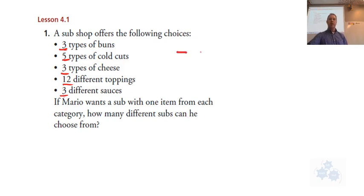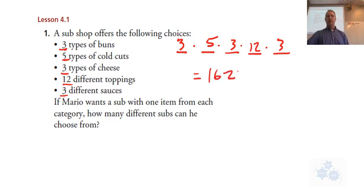If Mario wants a sub with one item from each category, how many different subs can he choose from? So we have buns, cold-cut meats, cheeses, toppings, and sauces. I have three choices for buns, five choices for the meat, three choices for cheese, 12 choices for toppings, and three for sauces. So you multiply all those together, and what do you get? 1620. If that is correct, just multiply these all out, then that's how many choices you have for different subs. You could go back there 1620 times and never get the exact same sub.